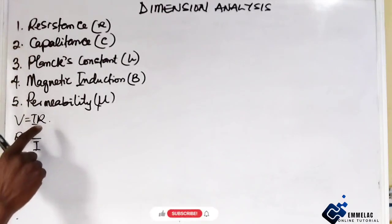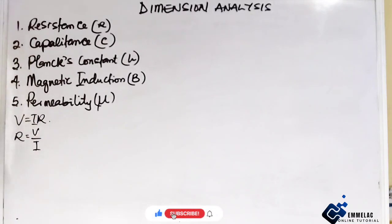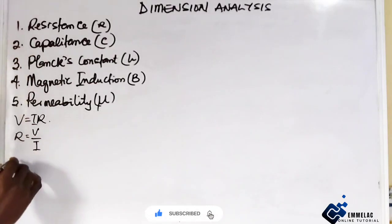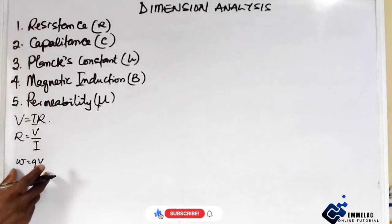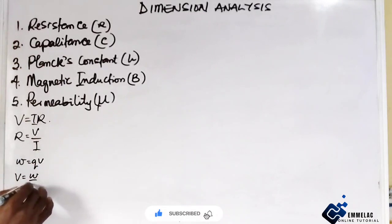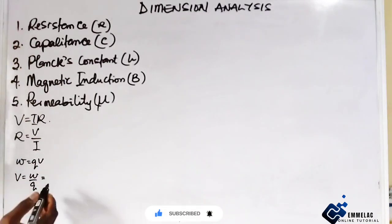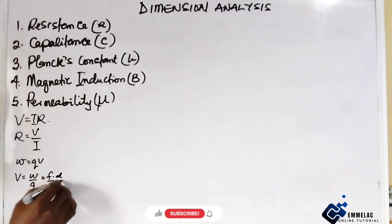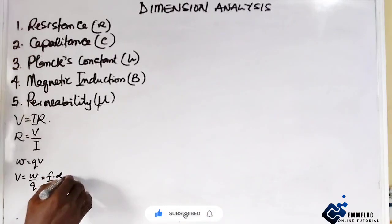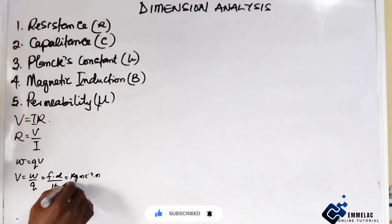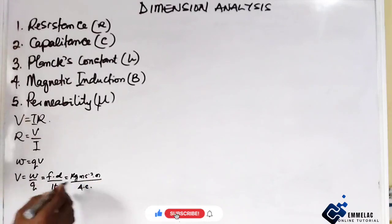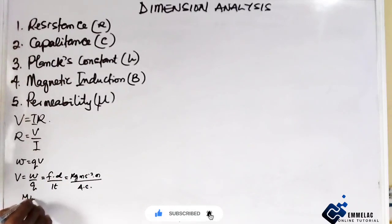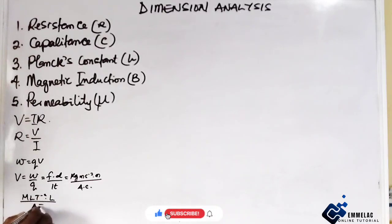We have already derived the formula for potential difference in a previous video. We can get the formula for potential difference as V equals work done over charge. This charge gives us force times distance over IT, which gives us kilogram meter per second squared times meter, all over the current A and the time in seconds.